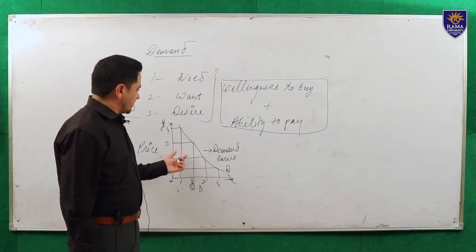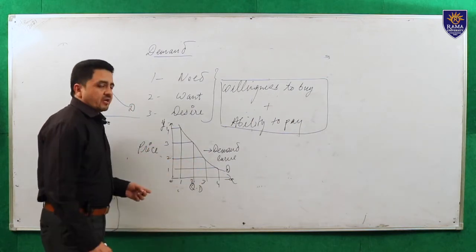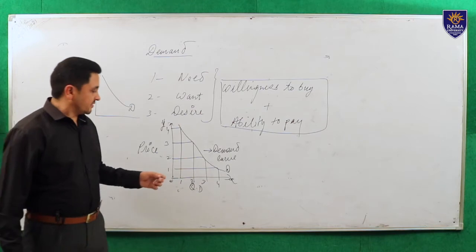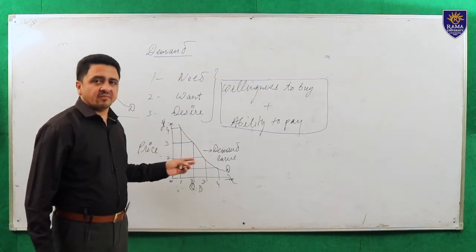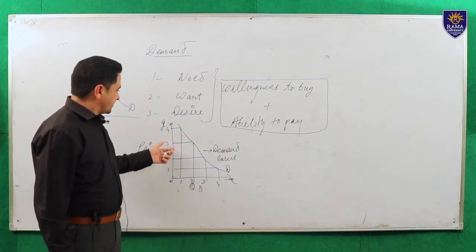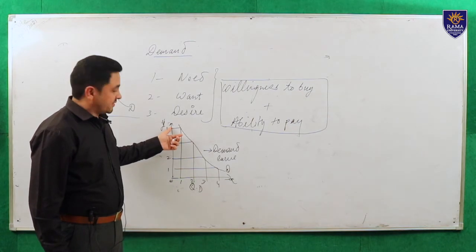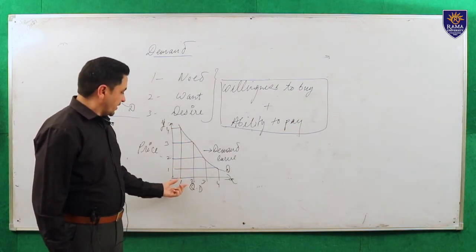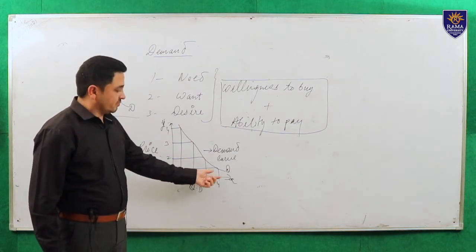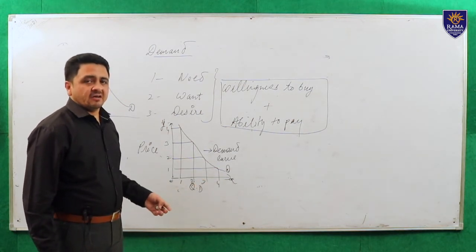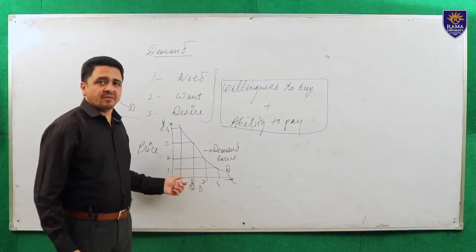We just have to discuss the law of demand also. What do you mean by law of demand? The law of demand states there is an inverse relation between price and quantity demanded. When the price is maximum, quantity demanded is minimum. And when the price goes to the minimum level, demand goes to the maximum level. This is the law of demand — there is an inverse relation between price and quantity demanded.